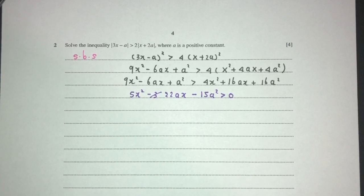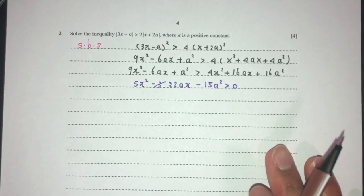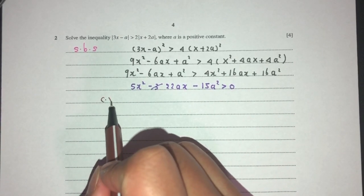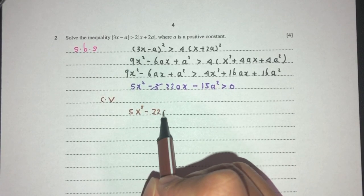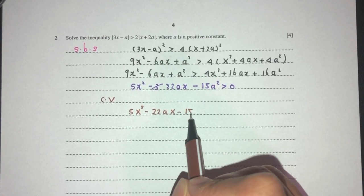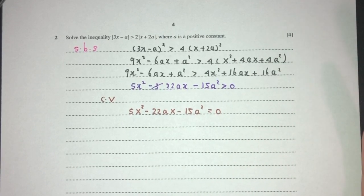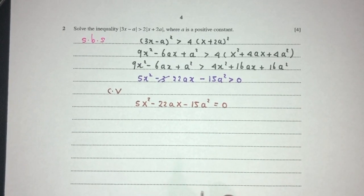Once you come to this step, we have to try to find the critical values of this equation. This is a simple quadratic equation. Critical values: 5x^2 - 22ax - 15a^2 equal to 0. You can solve this by using the formula as well, it's up to you. But I will give it a try to solve by using factorization.